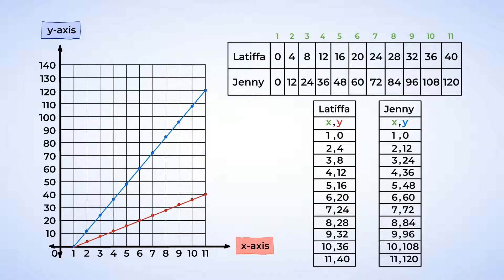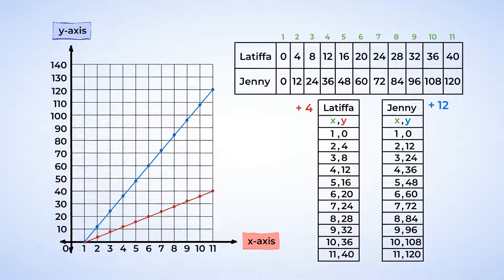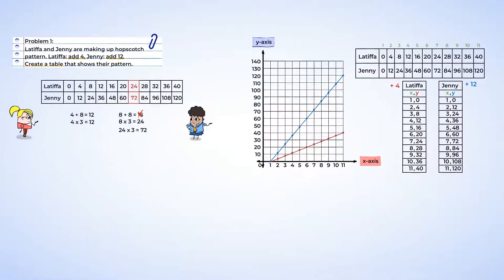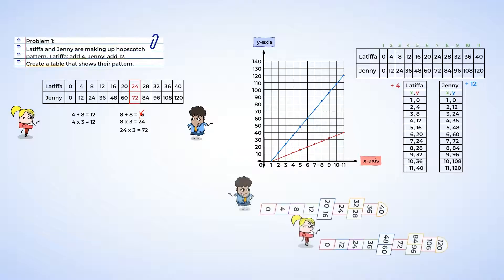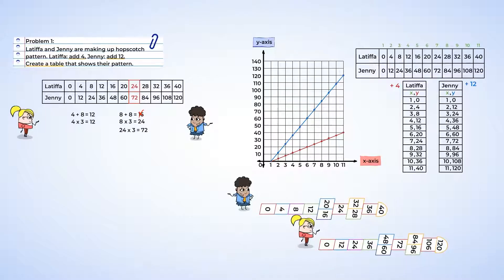This makes sense since Jenny's pattern added 12 each time while Latifah's only added 4. And notice that the space between the lines grows over time. The difference between the numbers for each box gets bigger each time. Good work here. I think Will was inspired by watching the girls make patterns and he wants to make one of his own.